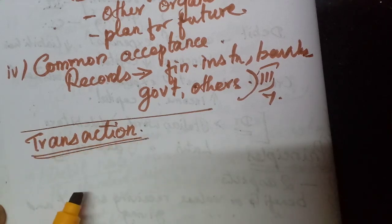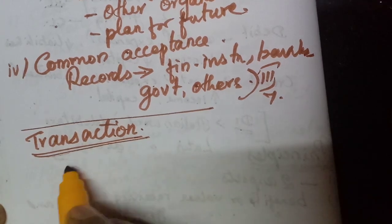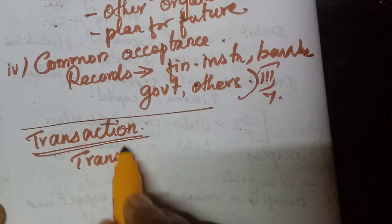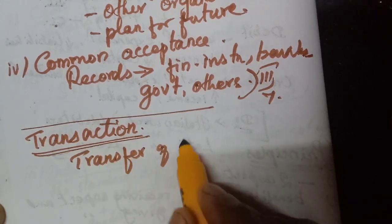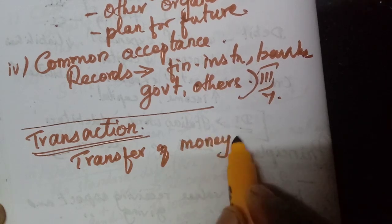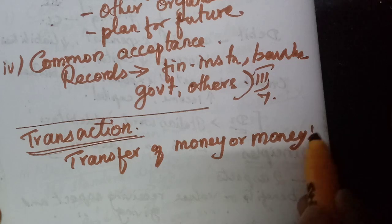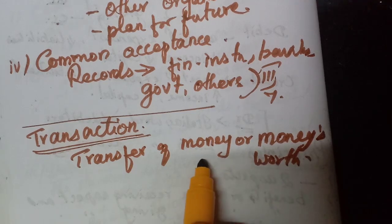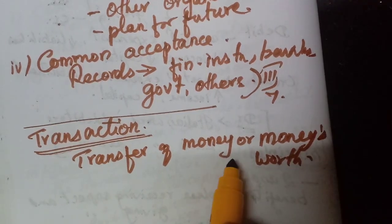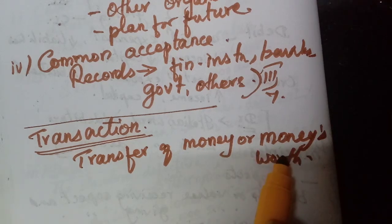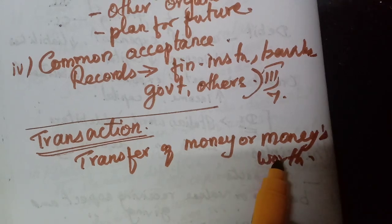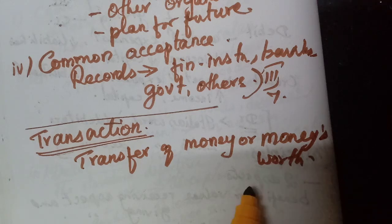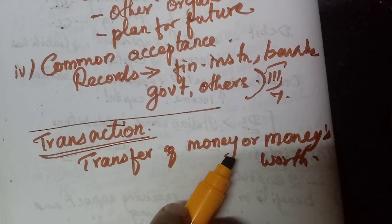We already know what a transaction is. A transaction means the transfer of money or money's worth — either we transfer cash or something equivalent to money, like a check which is equivalent to cash, or goods that can be valued in terms of money. All these are transactions.